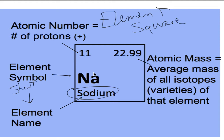The reason some symbols don't match their names is because the element name wasn't always 'sodium' to begin with — it was a Latin word that did contain 'Na.' Over time, we changed the Latin word into 'sodium,' so that's why some symbols don't match their current names very well.